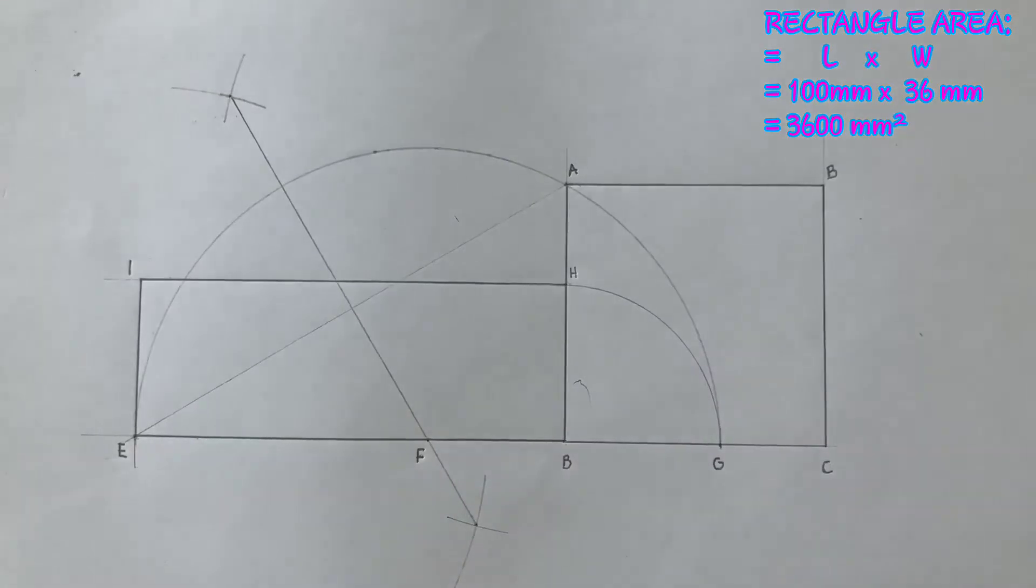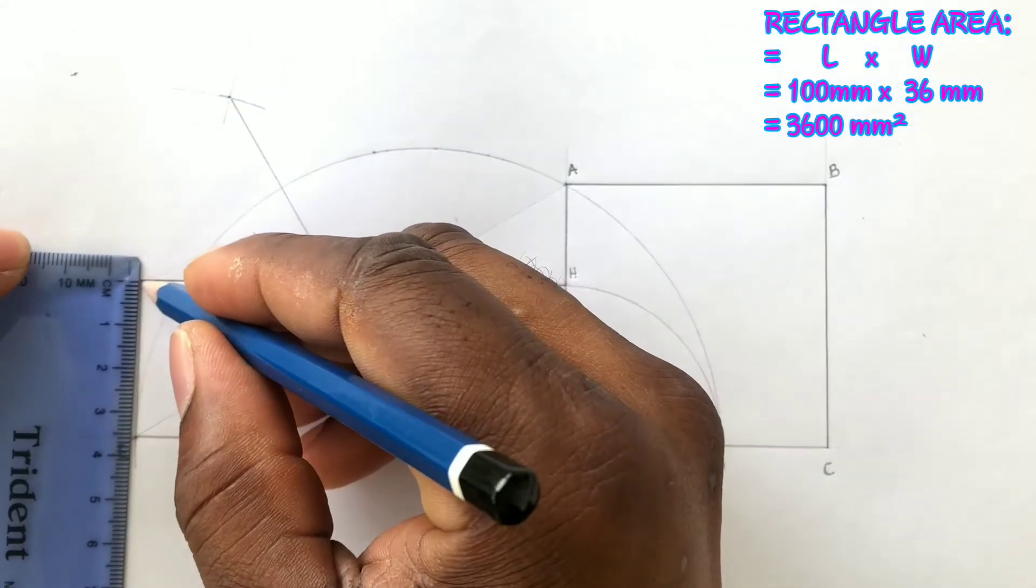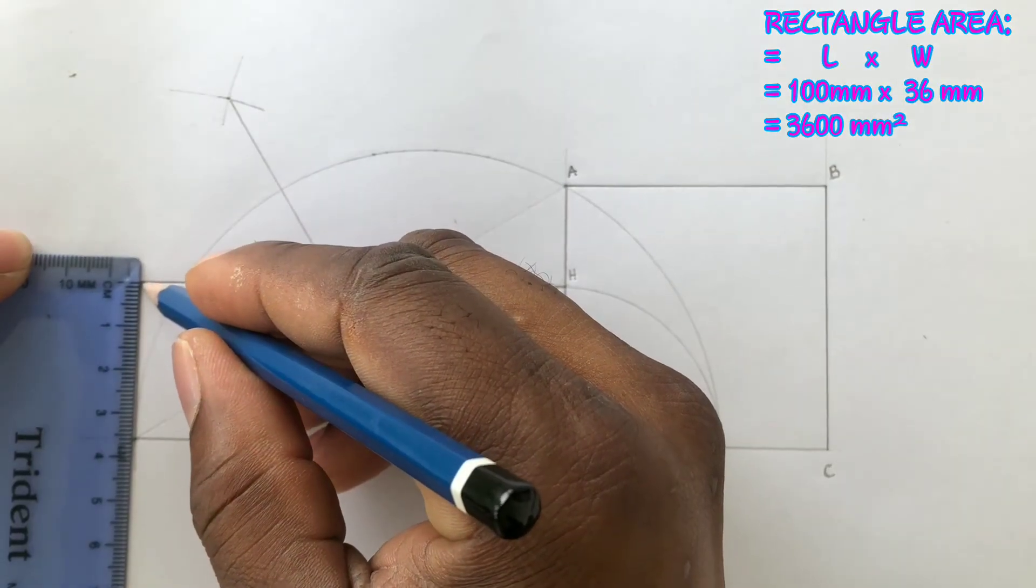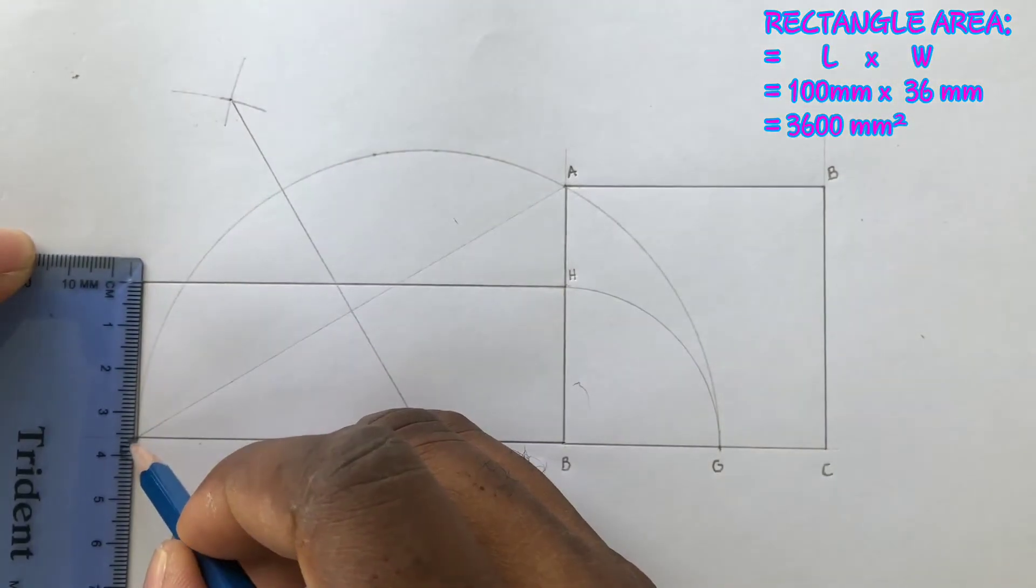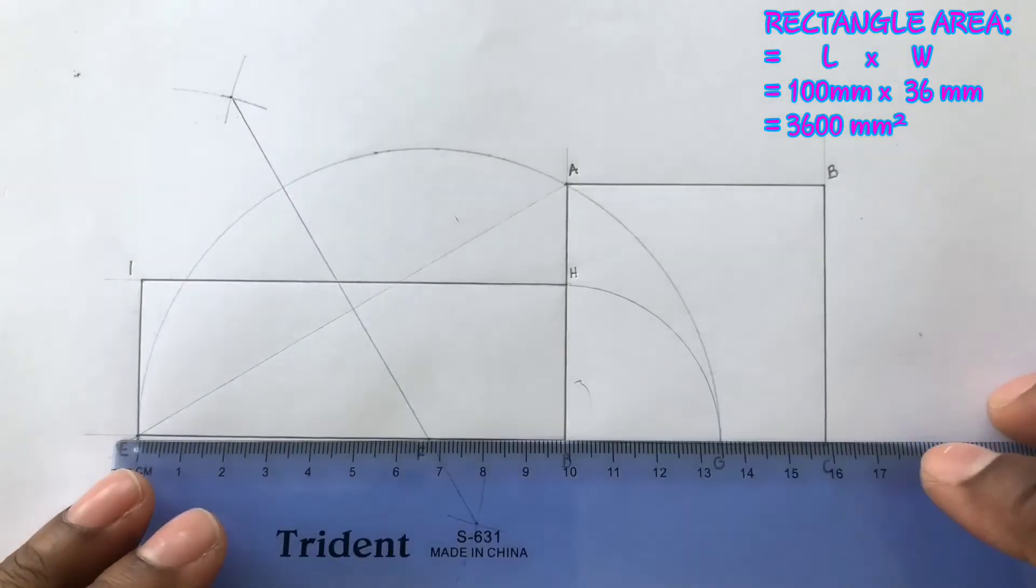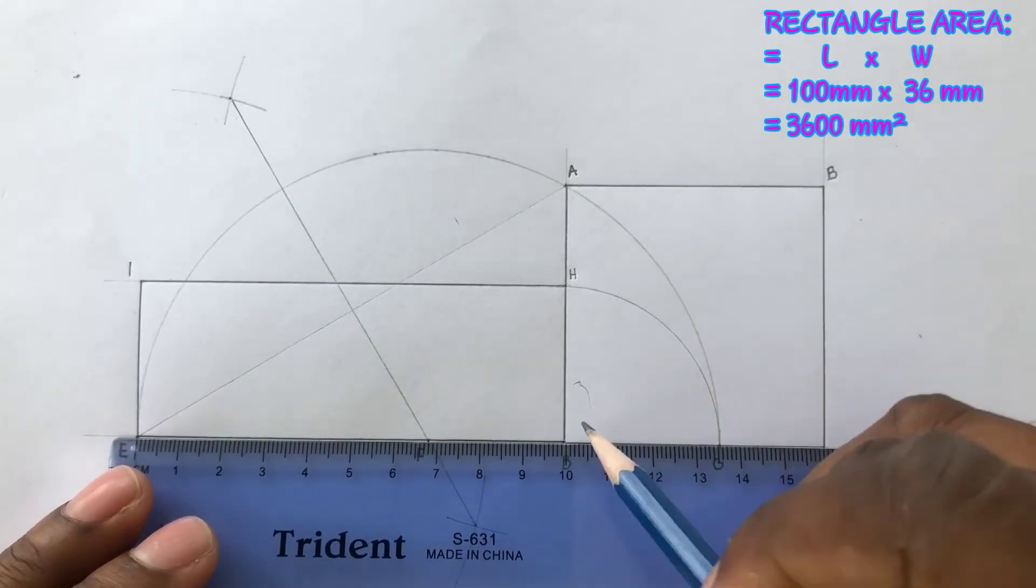Now the width of this required rectangle is 36 millimeters exactly. 36 millimeters times the length 100 millimeters gives us an area of 3600 millimeter square.